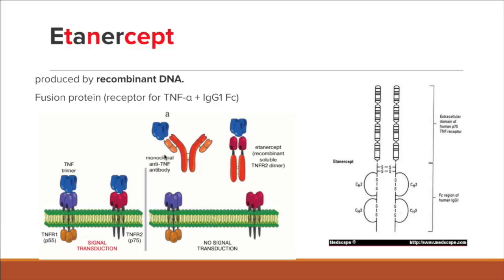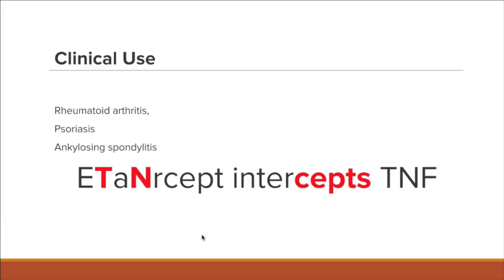Once etanercept binds tumor necrosis factor alpha, TNF can no longer bind to its receptor on the cells, which means there's no more signal transduction. There's no massive inflammatory response, no effects on osteoclastic activity or chondrocytes, no inflammation in the joints, and patients actually feel better. Etanercept is used to treat inflammatory conditions such as rheumatoid arthritis, psoriasis, and ankylosing spondylitis — all inflammatory conditions.